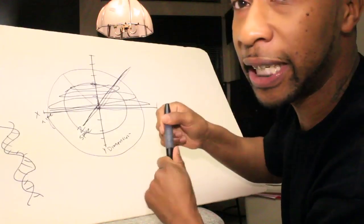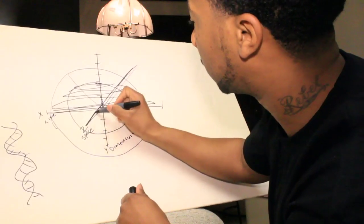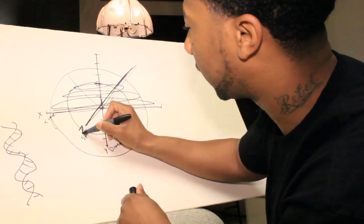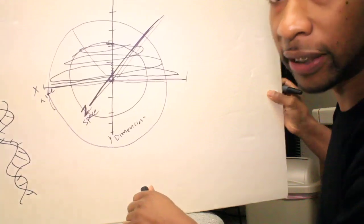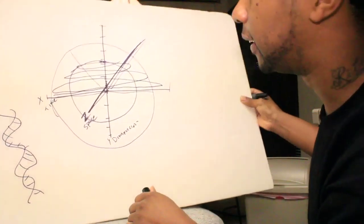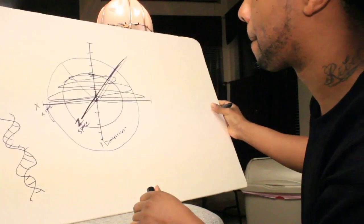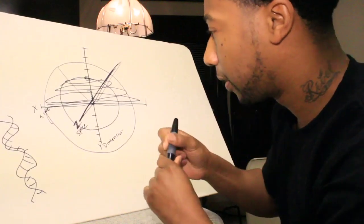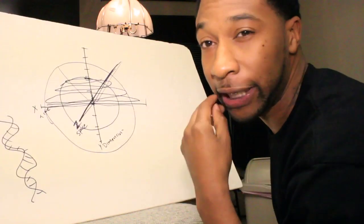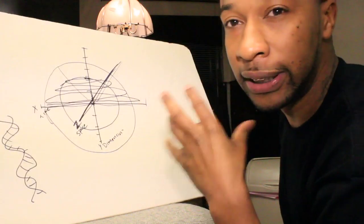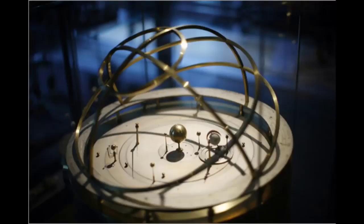But if this Z-plane, this Z-plane, if that Z-plane is space, that means when we look out into the planets, we're really looking out into dimensional time. You see what I'm saying?